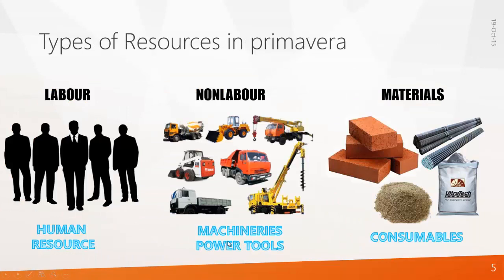Now let's see the types of resources in Primavera. There are 3 types of resources: labor, which is human resources; non-labor, which includes machineries and power tools; and materials, which are consumables.